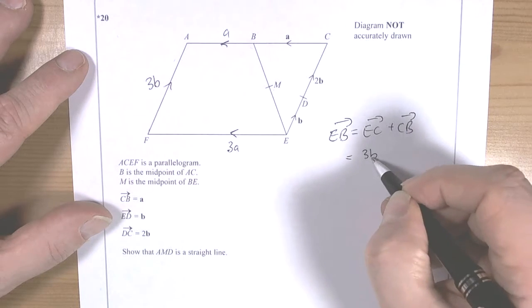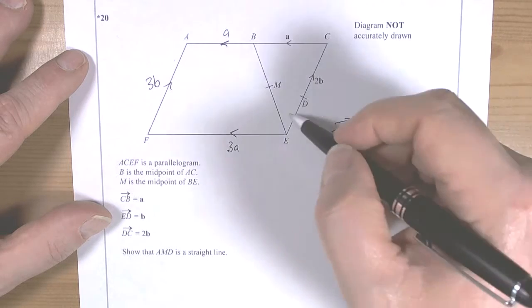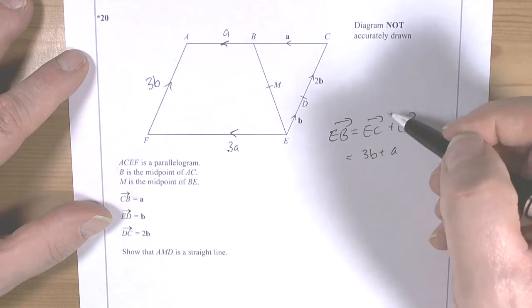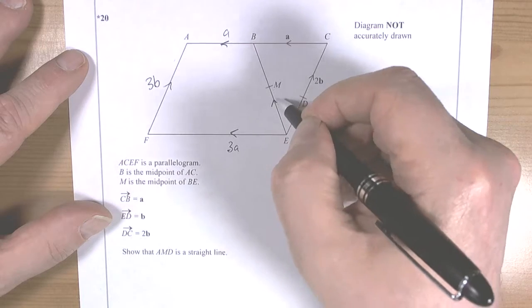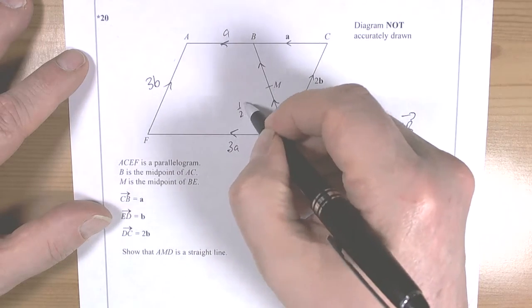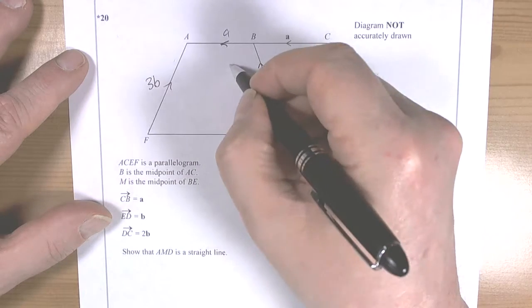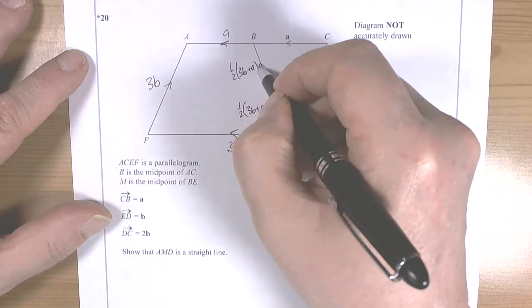So we've got 3b plus a, and they're telling us that M is the midpoint of that. So the arrow is going in that direction because we're doing E to B. And we know then that that is a half of 3b plus a, and this is also a half of 3b plus a.